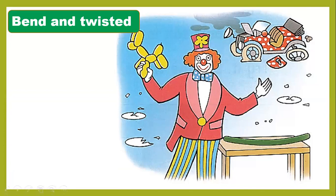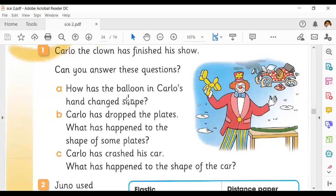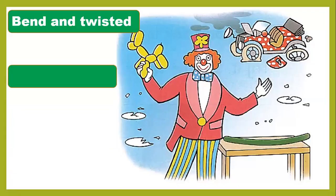Number two — the next question: Carlo has dropped the plates. What has happened to the shape of some plates? Look at the plates — before they were a complete round shape, but now they are broken into small pieces.